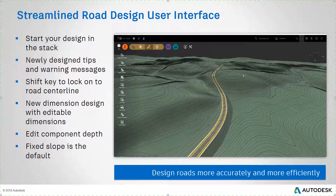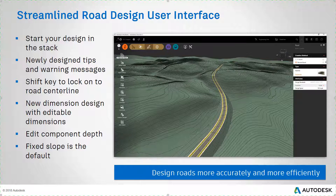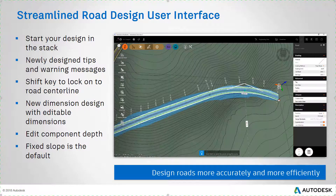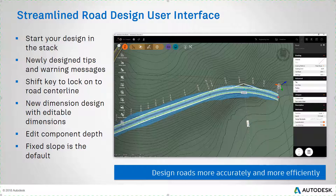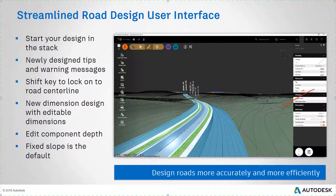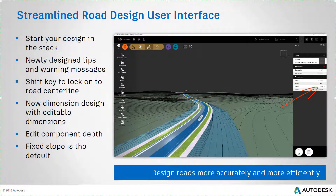With the latest release of InfraWorks, you'll find a more streamlined user interface for road design. When you begin your design, you'll find what you need neatly arranged in the stack on the right, including the assembly, design standards, and design speed. The newly designed messages at the bottom of the screen are more effective at sharing tips and warnings. You can now hold the Shift key to move a vertex along an established line or curve in the road alignment. Newly designed dimensions are easier to read and in some cases can be edited to control geometry in the model. You can now edit the depth of lanes and other road components to more accurately model the design and calculate quantities.